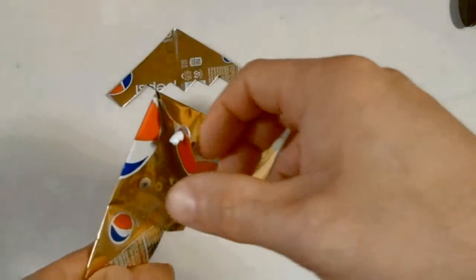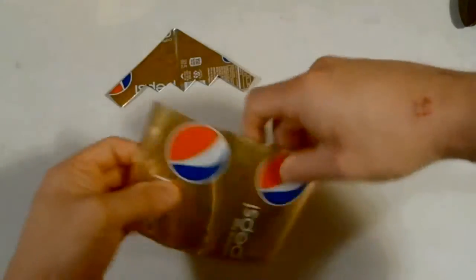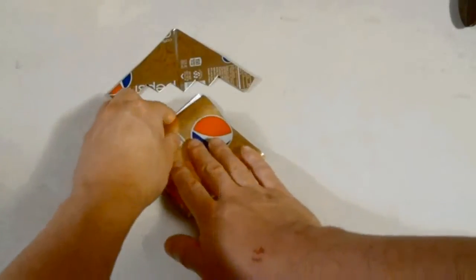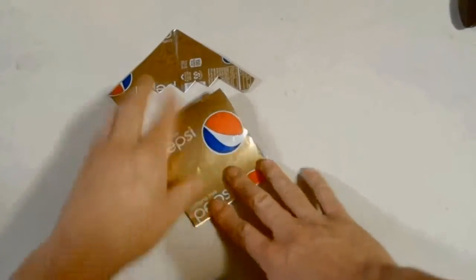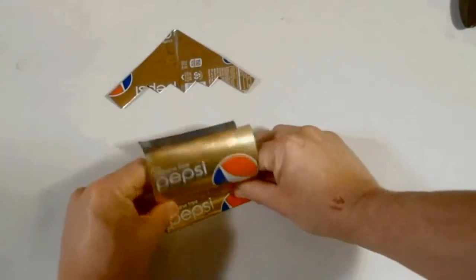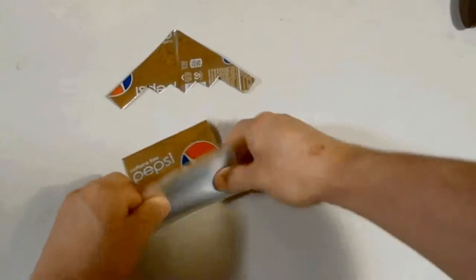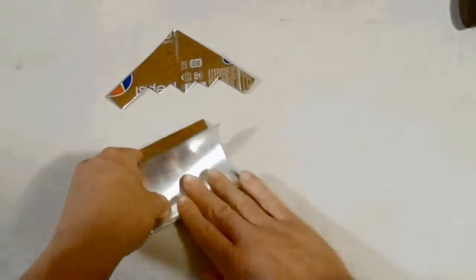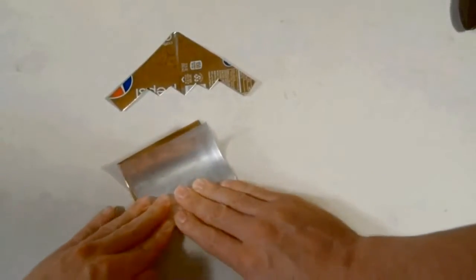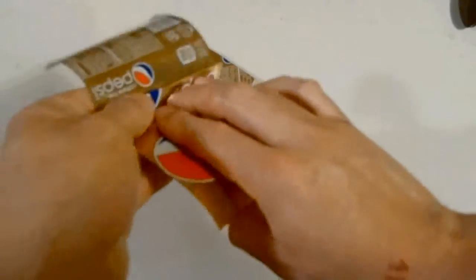Next thing you need to do is make this piece. Just take it, I fold it in half like this, and then I fold it again like this, and then I fold it again like this. Then you open it up so it's like this.